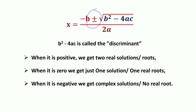The plus or minus means we need to perform both addition and subtraction, so there are normally two solutions. When using the quadratic formula, you should be aware of three possibilities. These three possibilities are distinguished by a part of the formula called the discriminant, because it can discriminate between the possible types of answers.